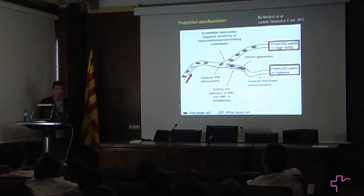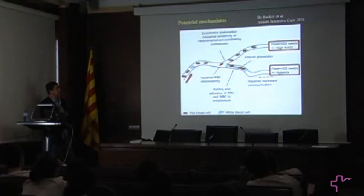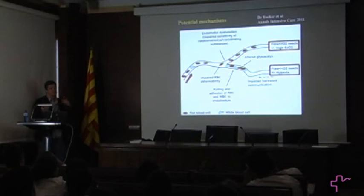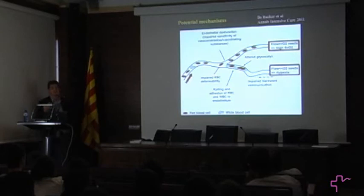To summarize these alterations: first, impaired backward communication — an area not perfused is no longer able to communicate with central areas. Second, plugging, rolling, and adhesion of white blood cells, red blood cells, and platelets to the endothelium, plus impaired red blood cell deformability. Third, endothelial dysfunction with impaired sensitivity to vasoconstrictive and vasodilatory substances. The result: some areas non-perfused and unable to signal centrally for more flow, and some areas over-perfused with more flow than required — leading to the heterogeneity seen in sepsis, with totally impaired matching of flow to metabolism.